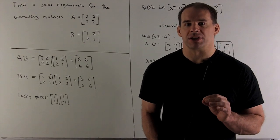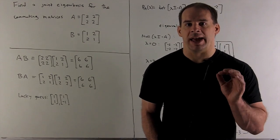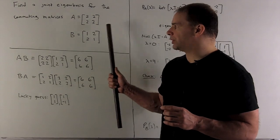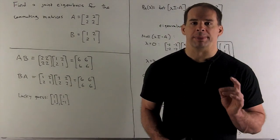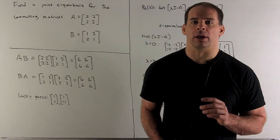Find a joint eigenbasis for the commuting matrices: A equals [2, 2; 2, 2], B equals [1, 2; 2, 1].